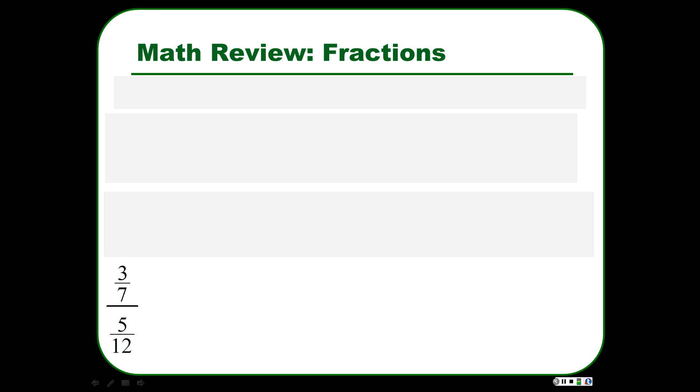So here's a little bit of an oddball that you see from time to time. 3 sevenths over 5 twelfths. That means 3 sevenths divided by 5 twelfths. And if you remember your fraction multiplication rules, you can just take the second number and flip it and multiply. So 3 sevenths divided by 5 twelfths is the same as 3 sevenths times 12 over 5. So then you just multiply across again. 3 times 12, 7 times 5, 36 over 35, which is 1 and 1 thirty-fifth, which turns out to be 1.03 if you round off to two decimal places.